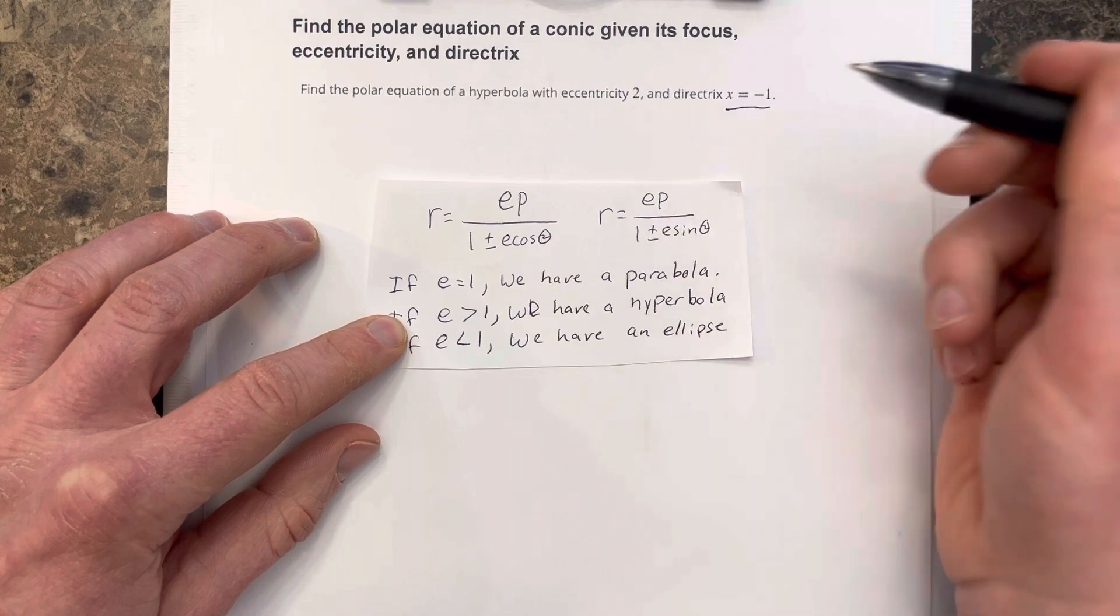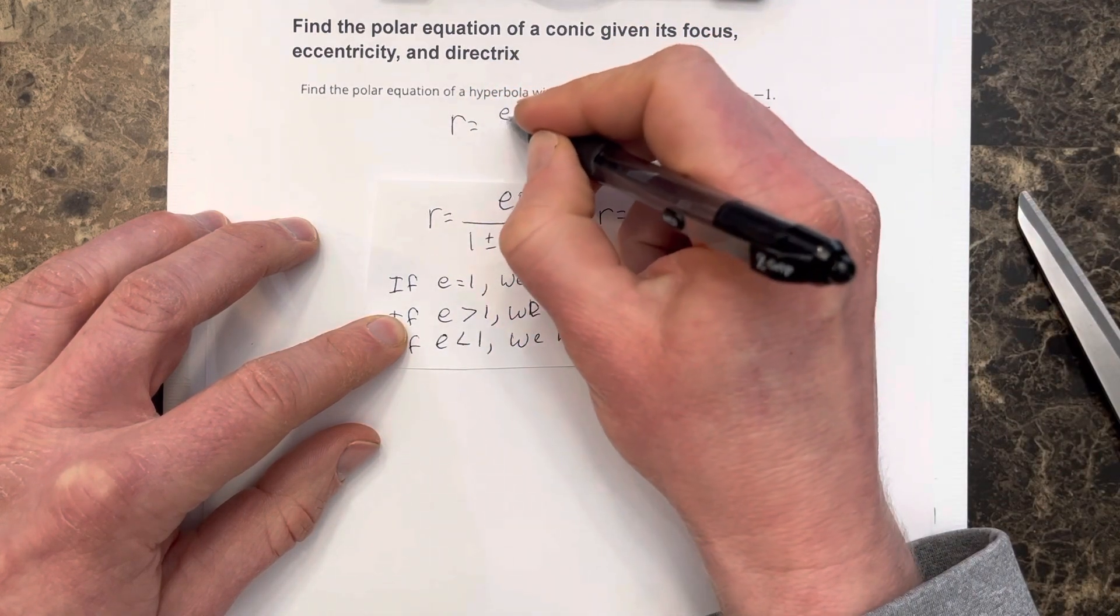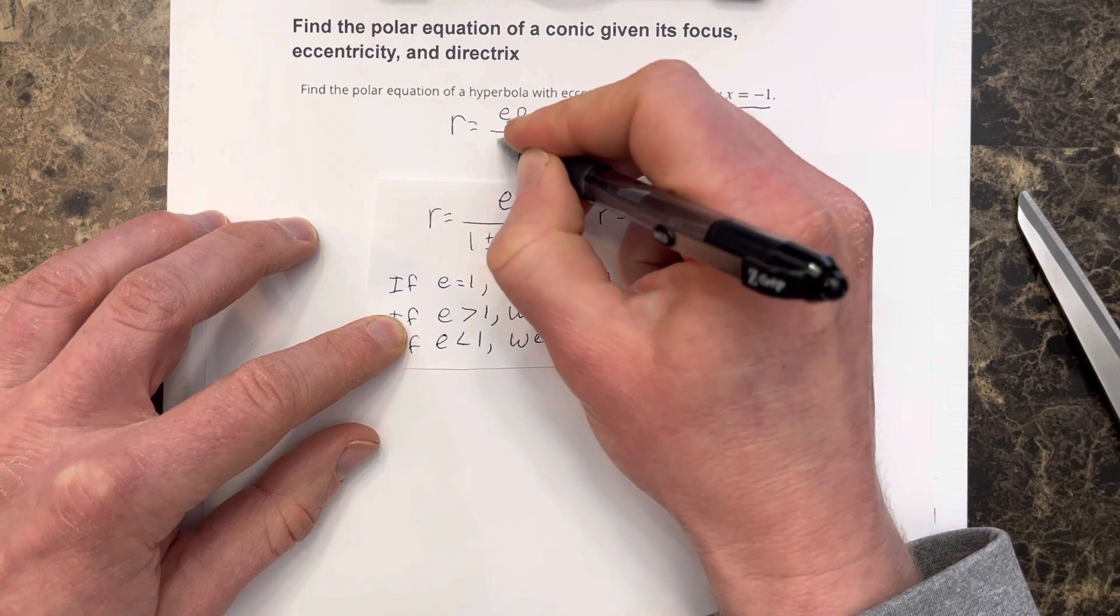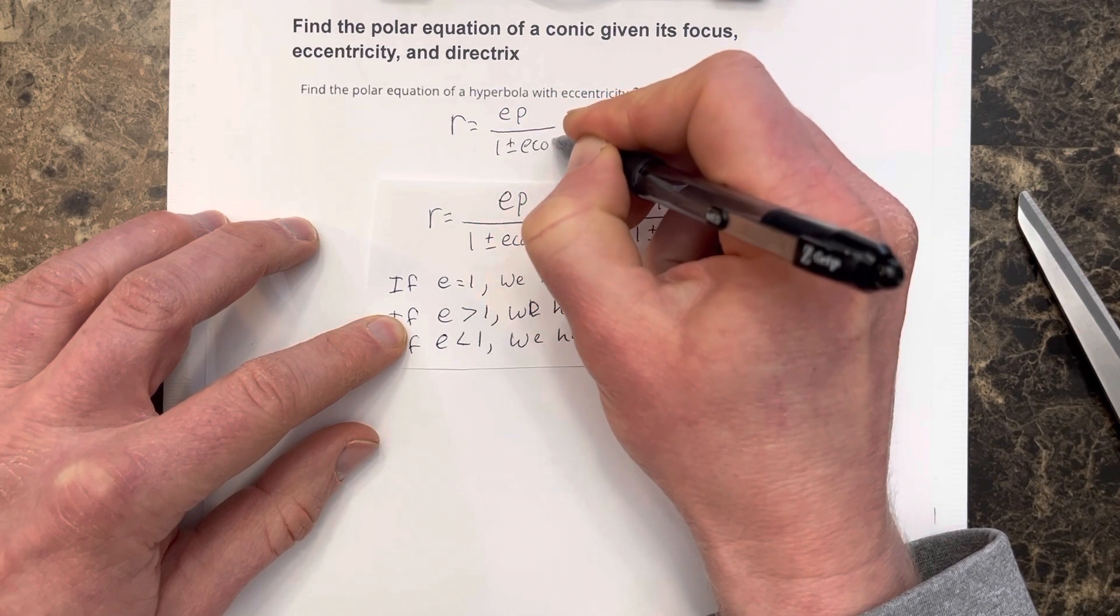Or either to the left or to the right. So I'm going to say that we're going to use r equals ep divided by 1 plus and minus e cosine theta.